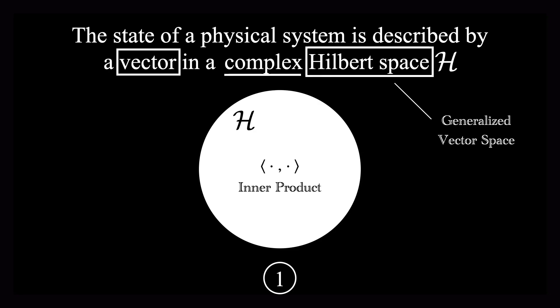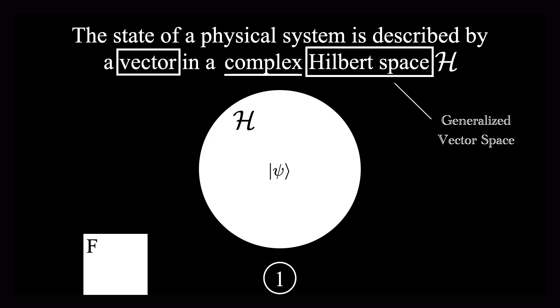So what does it mean for a Hilbert space to be complex? This means that the field underlying the Hilbert space is the complex numbers. So if we scale the length of any vector in the space, or if we take a linear combination of some vectors, then the values we use will be complex numbers.